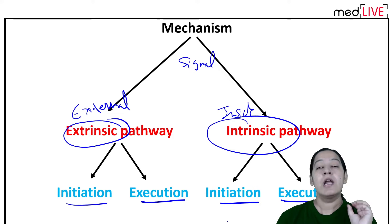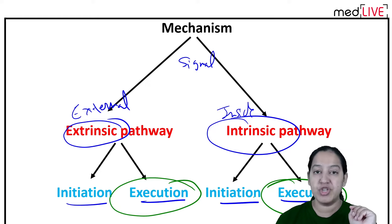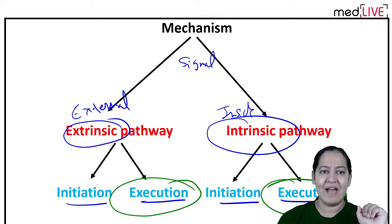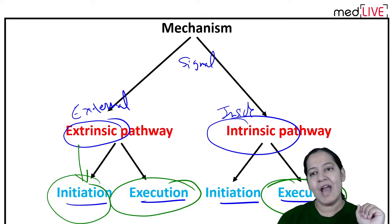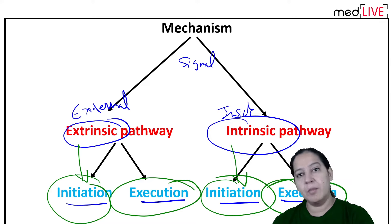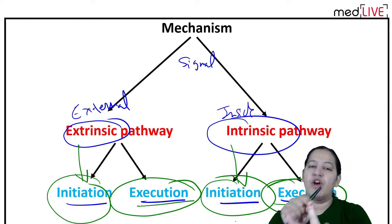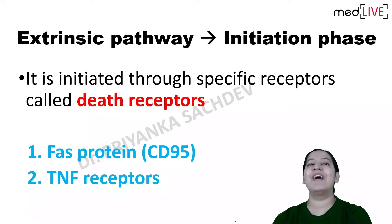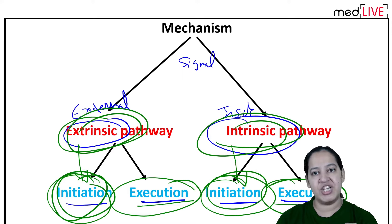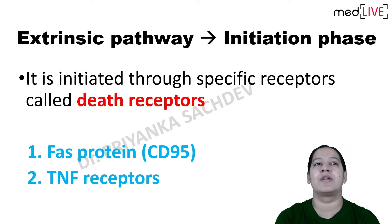Both pathways have two phases: initiation phase and execution phase. The beauty is that the execution phase of both pathways - intrinsic and extrinsic - is common. I will tell you initiation of the extrinsic pathway, then initiation of the intrinsic pathway, and leave both at intermission. Then the execution pathway will be continued, which is common for both.